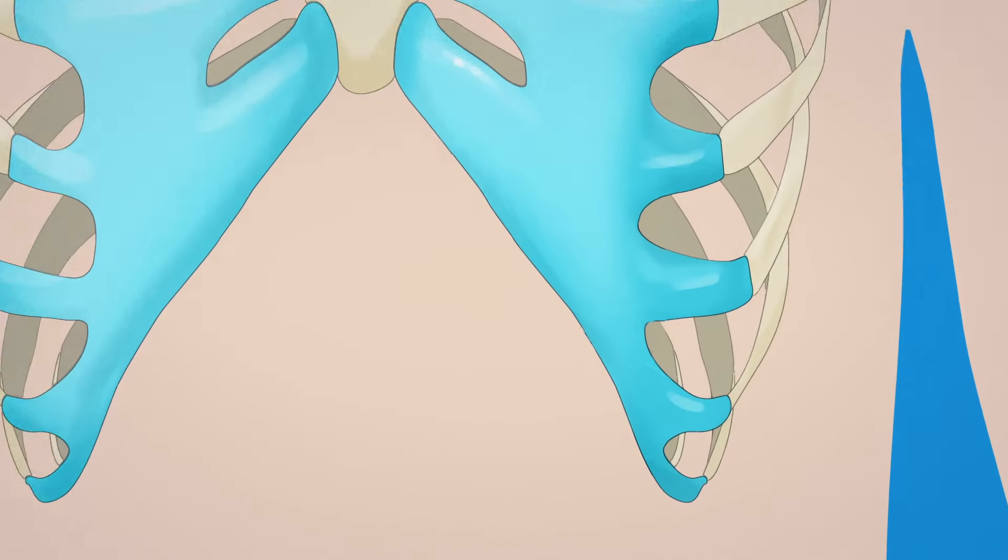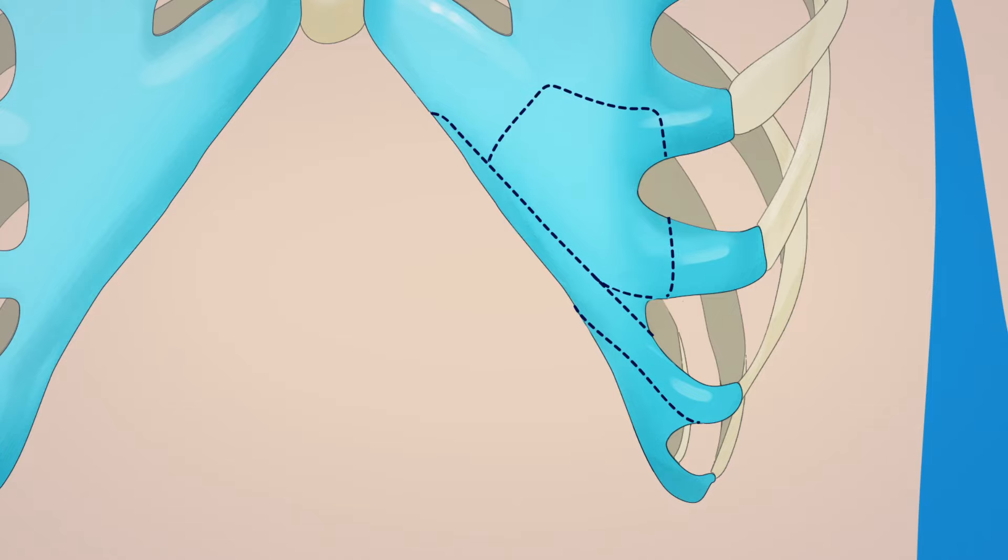The doctor chooses pieces of cartilage from your child's ribs. He or she will use this cartilage to create the new ear.